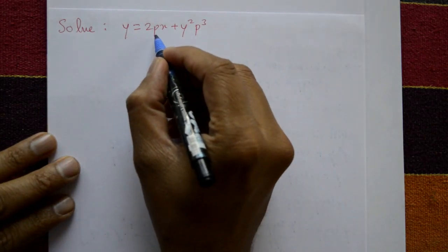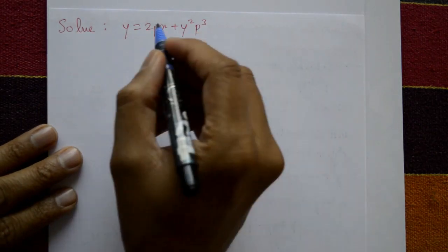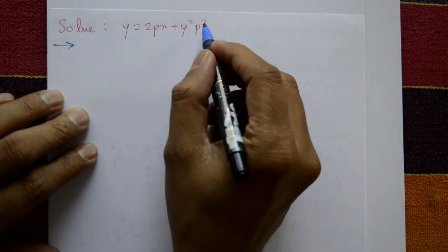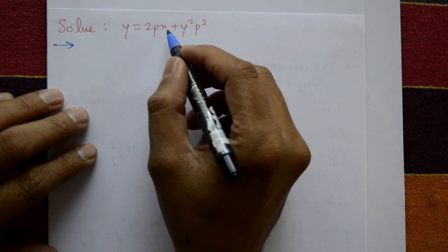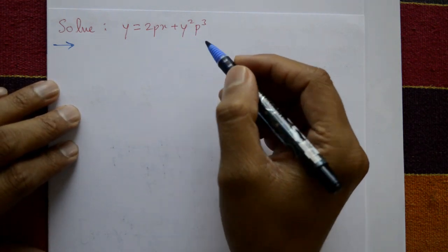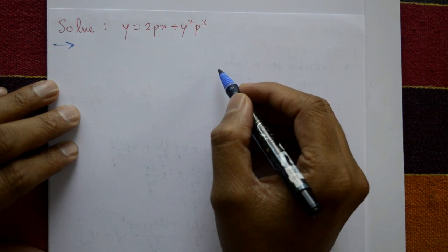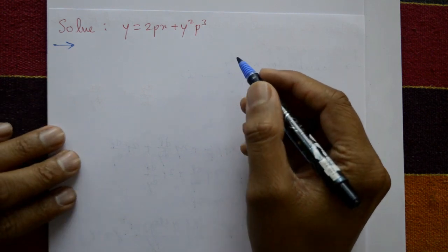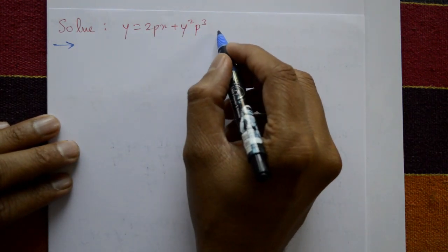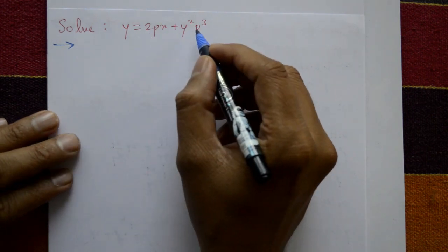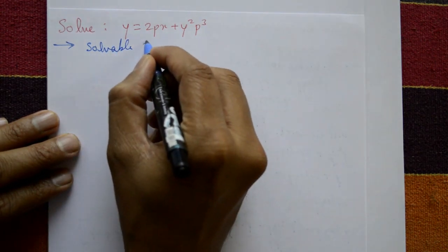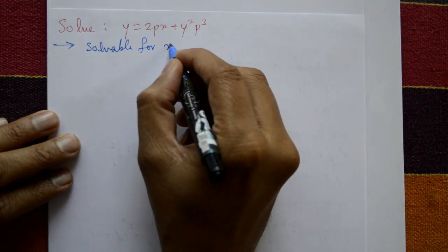Solve y = 2px + y²p³. Find the general solution. First, check if the expression is solvable for p, y, or x. It is not possible to solve for p, and not possible to solve for y. The given expression is solvable for x only.